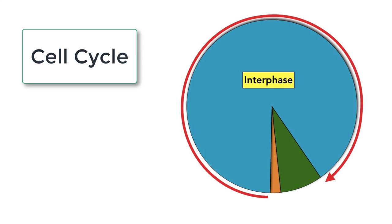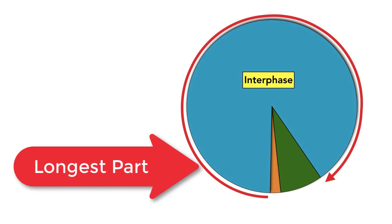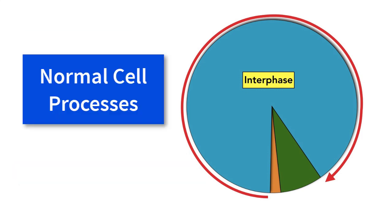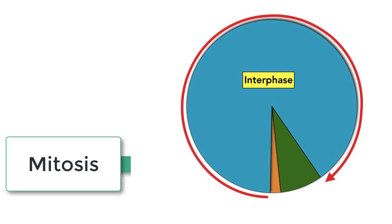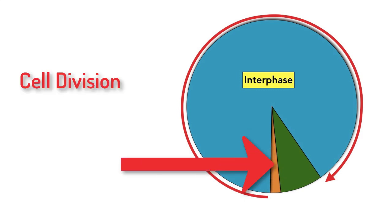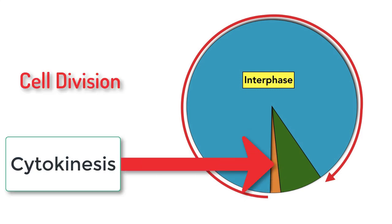So where in the cell cycle does mitosis fit? The longest part of the cycle is known as interphase, and for most of this time the cell is just doing normal cell processes. It's towards the end of interphase that the cell begins to prepare for mitosis, marked here by the green section of the graph, followed by cell division — the yellow part — otherwise known as cytokinesis.